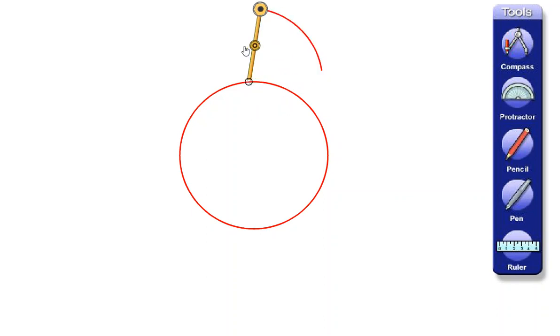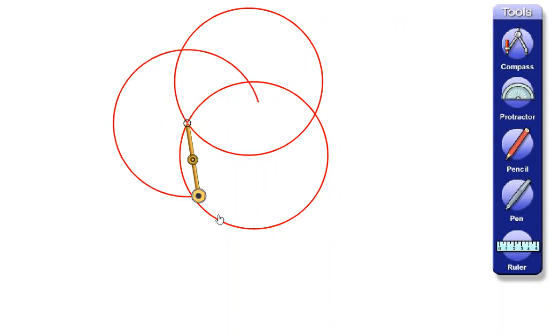Once you've done that, draw another circle. Round we go. Okay, and then we're going to draw five more. What we're going to do each time now is pick up the compass point and move it to where the circles cross on the circumference of the original circle. So there's one.